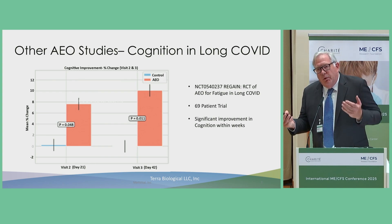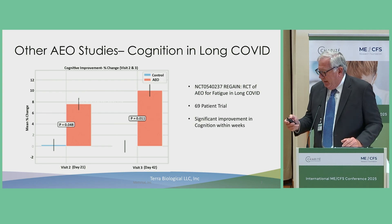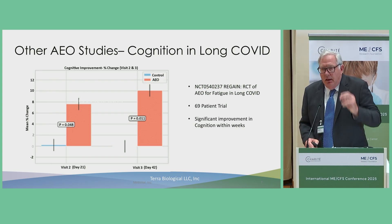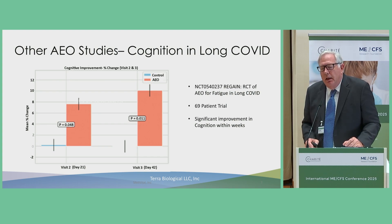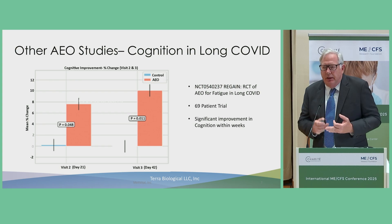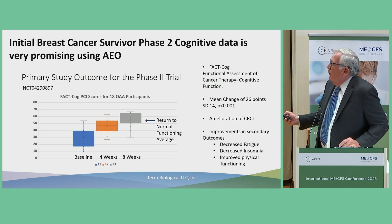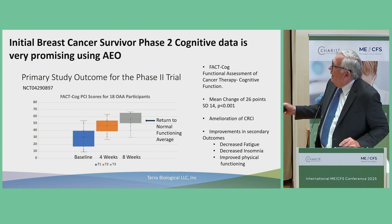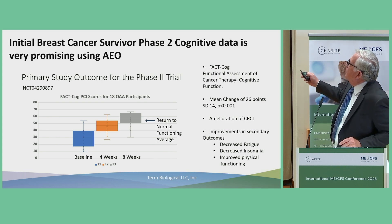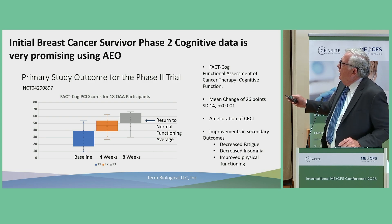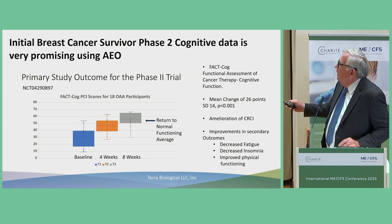Because we're reversing the Warburg effect, we thought we should test this out in cancer also. We worked with UCLA in a Phase II clinical trial on women with breast cancer who had surgery, radiation, and chemotherapy, or some combination thereof, and had serious chemo brain. We used the Functional Assessment of Cancer Therapy — Cognitive Function scale. After four weeks we saw a huge jump, and after eight weeks we returned these women a 26-point improvement, highly significant, to normal functioning.